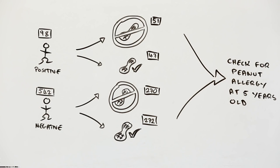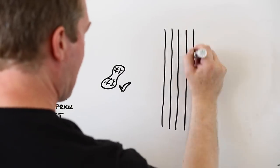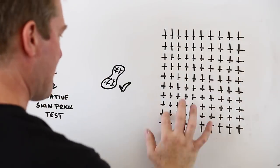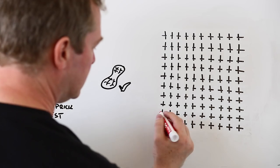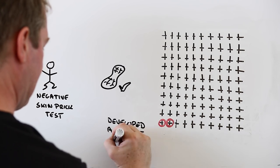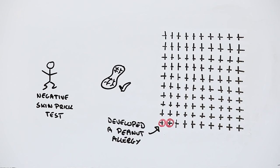The results were quite startling. Take those children that were considered only somewhat likely to develop a peanut allergy. Out of those that ate peanut products every week, two out of every 100 of them ended up developing an allergy.